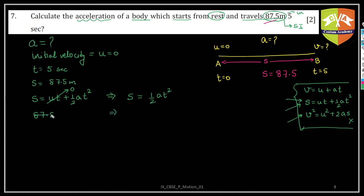So s is half a t square. From here what will happen? a is to be found out, so a is nothing but twice s divided by t square. Simple - two times s divided by t square, and now very easy.